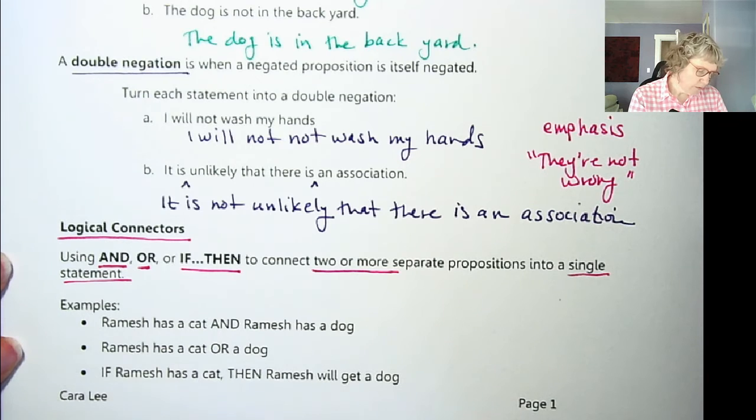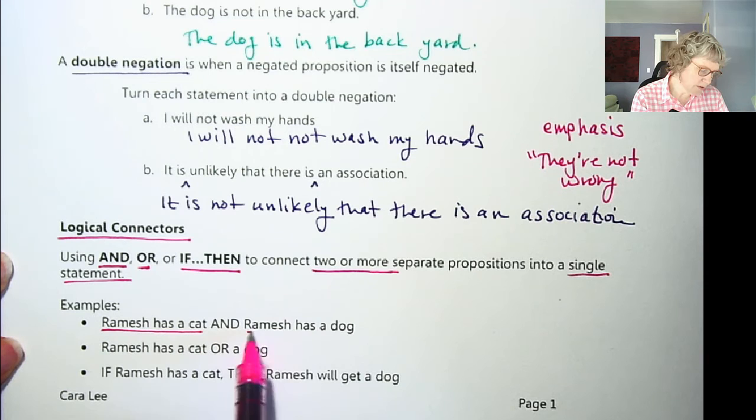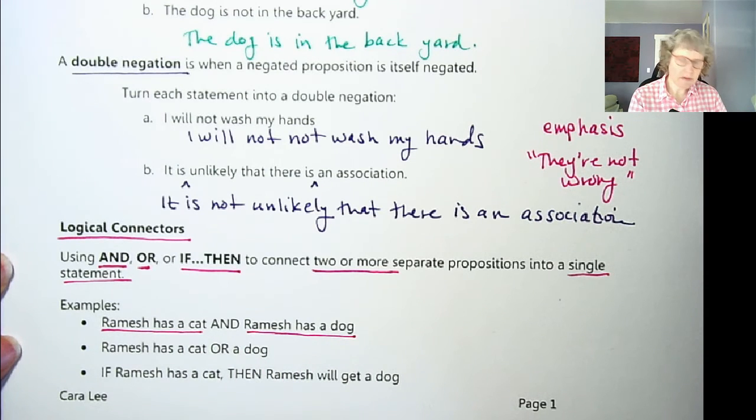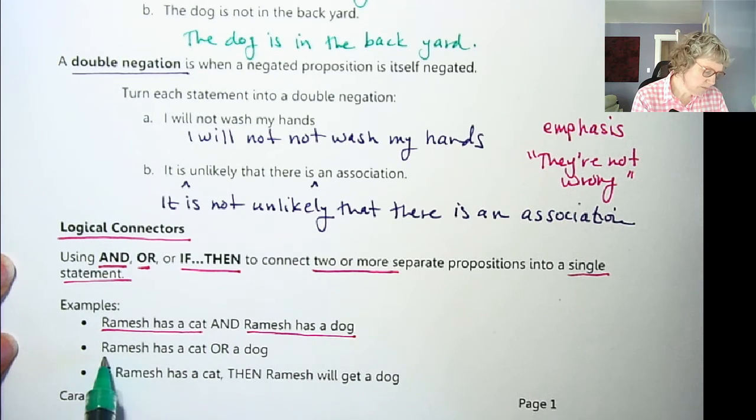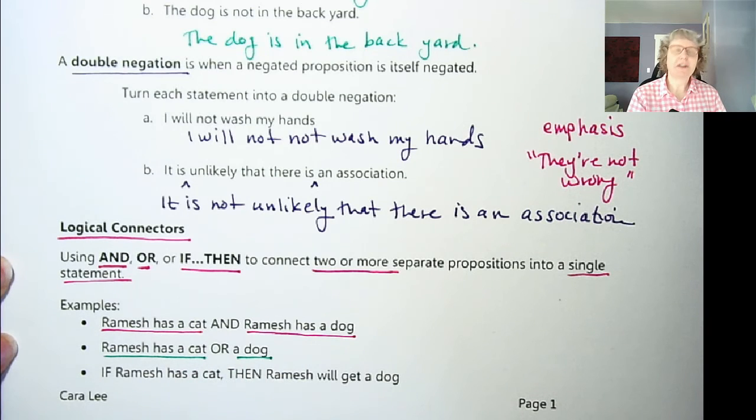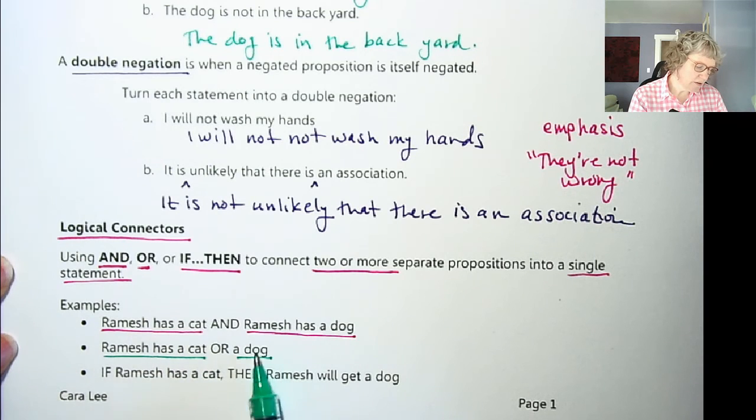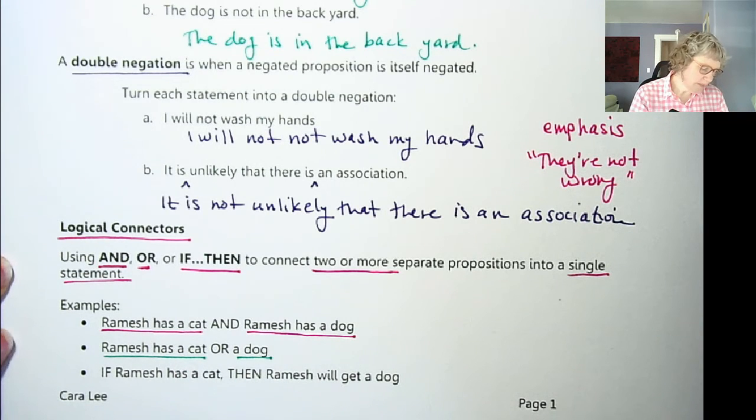So a couple examples. Ramesh has a cat and Ramesh has a dog. So here's two different propositions. Again, each could be true or false. Ramesh has a cat and Ramesh has a dog. Now I put it like this to emphasize these are two separate propositions. But often we would do a little shortcut, like I did on the second one, Ramesh has a cat or a dog. We wouldn't usually repeat the person's name if we were speaking that. But so this is a shortcut, but with an or, I could have said Ramesh has a cat or Ramesh has a dog, right?